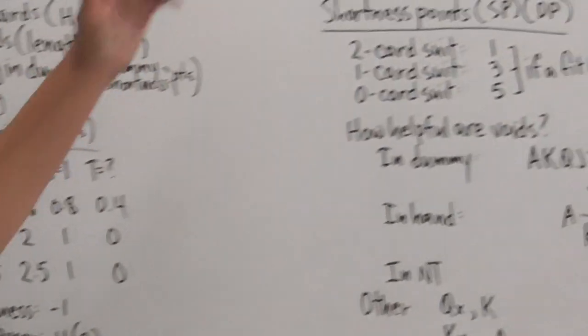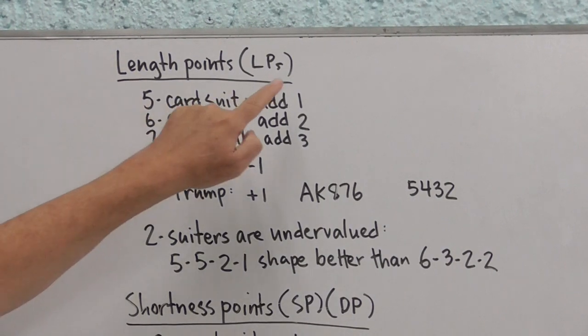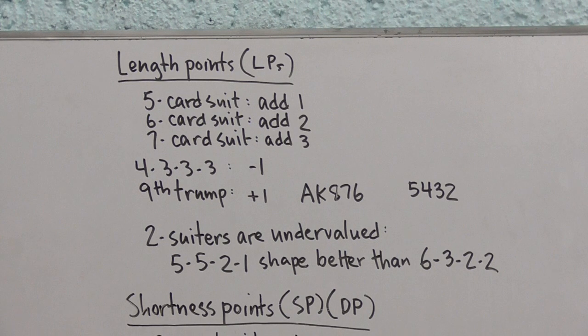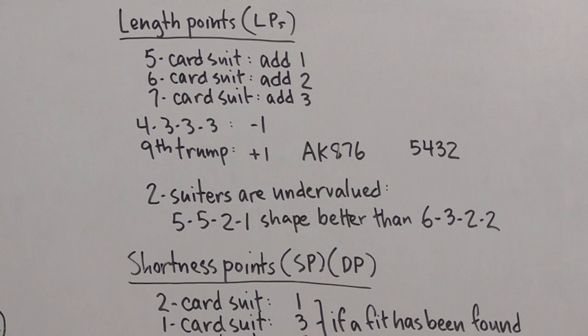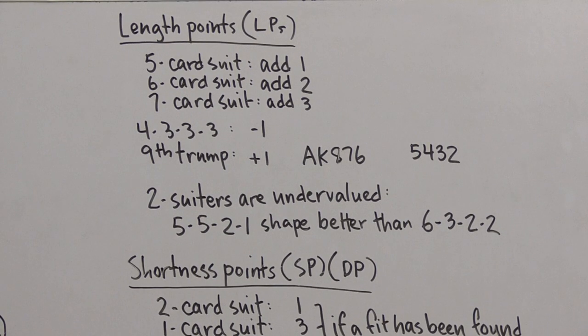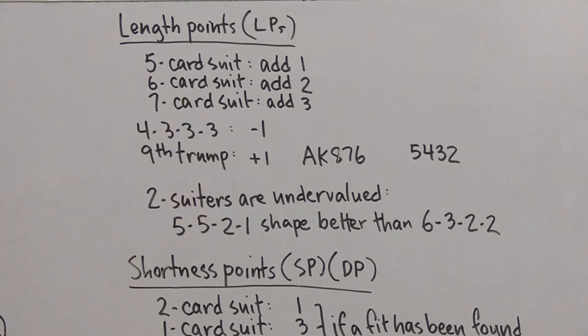So that's high card points. Now let's look at length points. We give ourselves an extra point for the fifth card in a suit. We'll add one for that. If we have a six-card suit, we'll add two. And if we have a seven-card suit, we'll add three. Now the other side of that is this flat hand. We want to deduct a point for that. This hand has no ruffing value and no running suits. So it's just not as good as a hand with a five- or six-card suit in it, or a hand with a one- or a two-card suit in it.